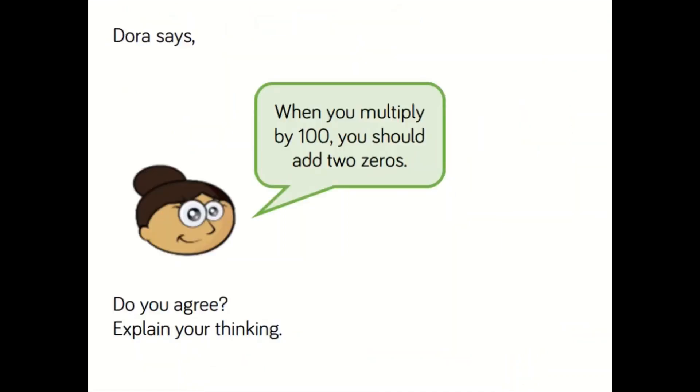Dora says, when you multiply by 100, you should add two zeros. Do you agree and explain your thinking? Let's have a look at an example. If we had, for example, 32 multiplied by 100, we know that in the place value table, this means it jumps two to the left. And that does give us the answer 3,200. So you might think, well yes, she's right. You just add two zeros.